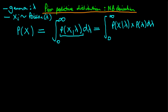We can see that this first term is simply the likelihood function for this observation x, and this second term is simply our prior — our prior on lambda.